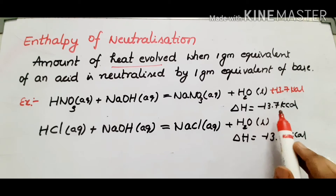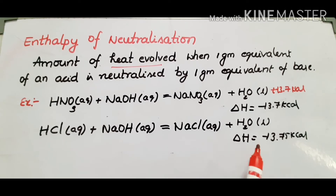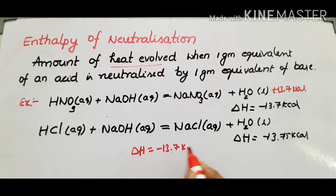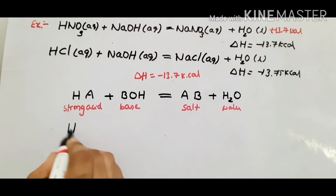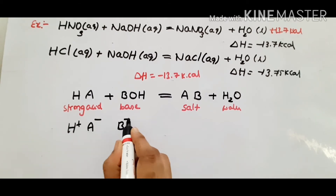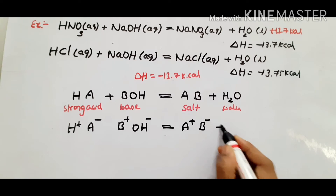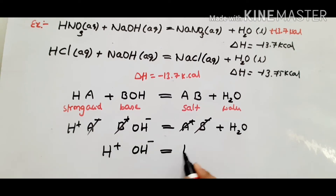That is why delta H will be negative. For example, HCl is also a strong acid and NaOH a strong base. It will give you NaCl salt in aqueous solution. For strong acid H plus A minus and strong base B plus OH minus, the salt in aqueous solution is A plus B minus plus H2O liquid. We can cancel both sides, so the net ionic equation is: H+ plus OH- gives H2O liquid.